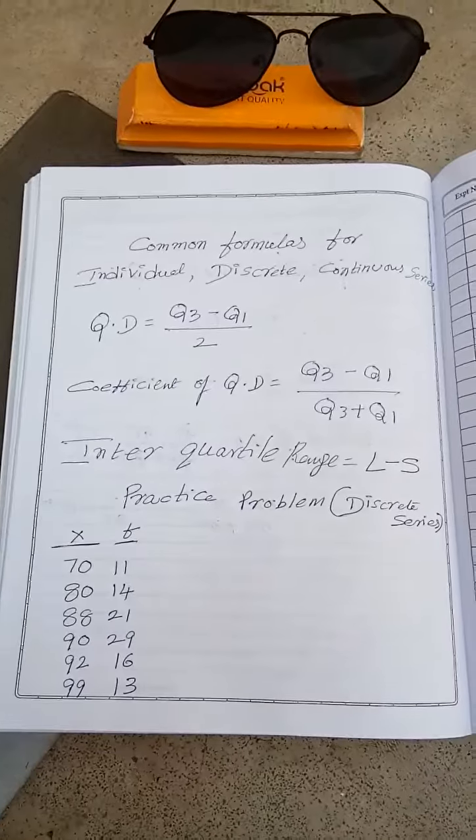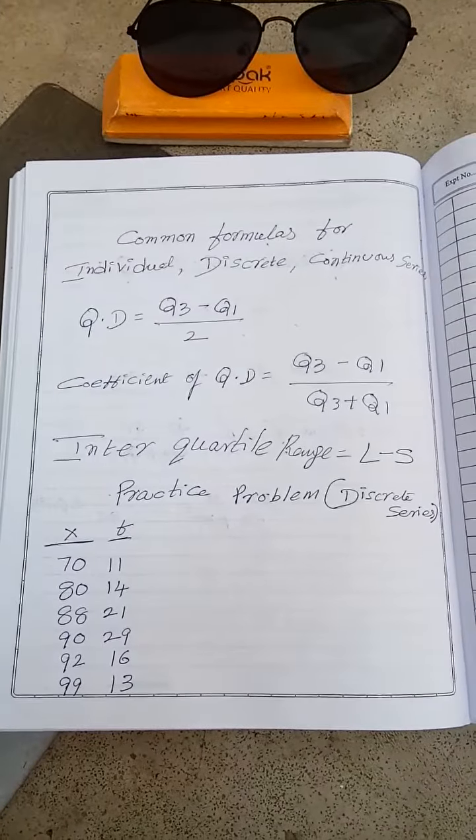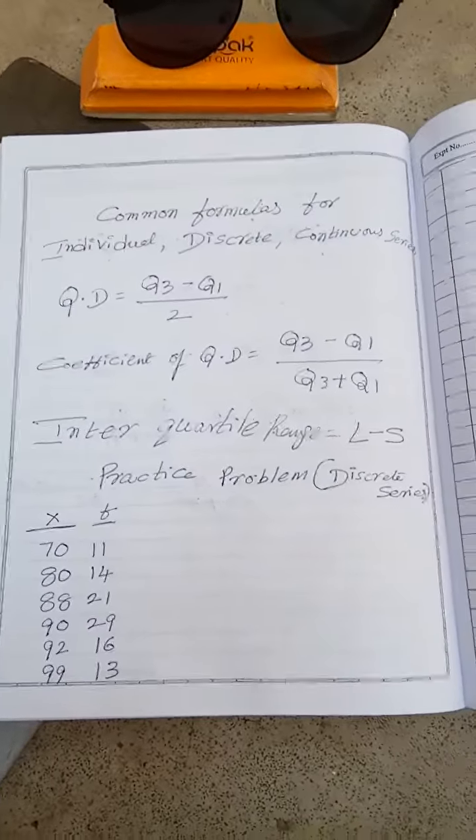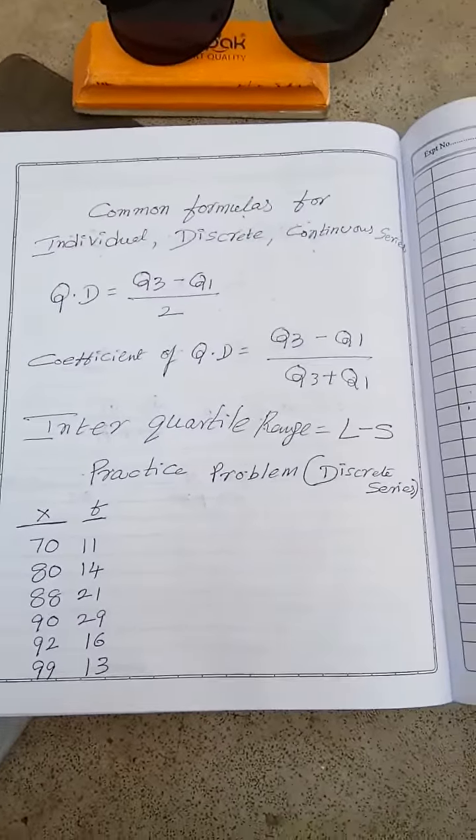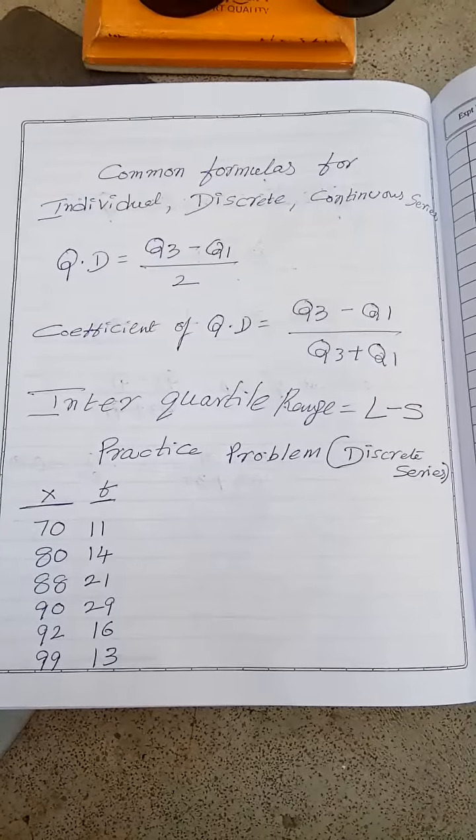And here I want to give the formulas, common formulas in case of individual series, discrete series and continuous series. Yeah, QD means Q3 minus Q1. That Q3 minus Q1 by 2, that's all you have to say. Yeah, either it's in individual or discrete or continuous, whatever it may be.